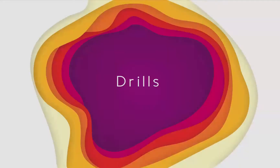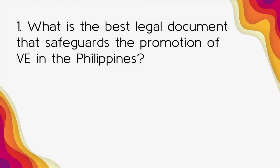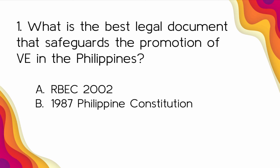You can have paper and pen, write your answer, and later check your correct answers. Number one: What is the best legal document that safeguards the promotion of values education in the Philippines? A) RBEC 2002, B) 1987 Philippine Constitution, C) Charter of the United Nations, D) Universal Declaration of Human Rights.